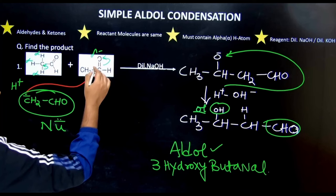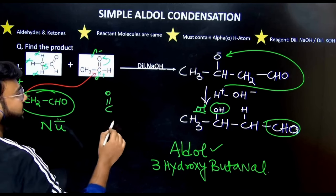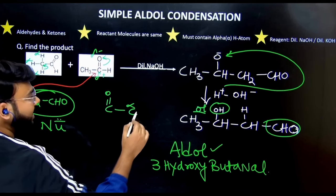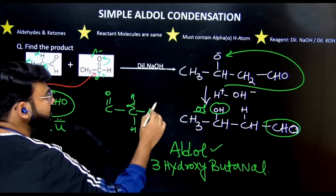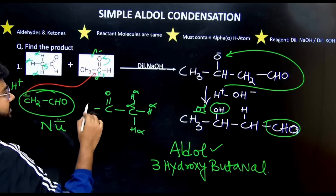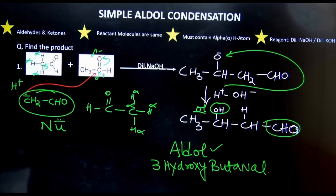Alpha hydrogens means, if you can see, this is the carbonyl group. The neighbor carbon is alpha carbon and their hydrogens are called alpha hydrogens. So in this way, there are three alpha hydrogens. All right.